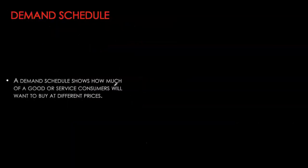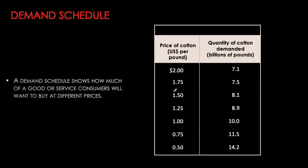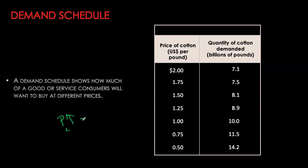A demand schedule will give us a relationship between these two. Here I have the price of cotton starting from $2 and going all the way down to 50 cents per pound, and the quantity demanded corresponding to all of these different prices is listed in this table. As you can see, as the price of cotton goes up, quantity demanded of cotton is actually going down, and vice versa.